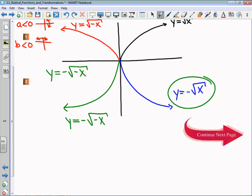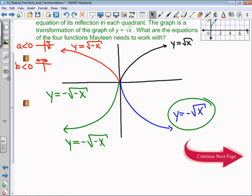So in order for Maylene to make this symmetrical pattern, she reflected it across the x-axis and the y-axis. The four equations we're going to work with are y equals root x for quadrant 1.